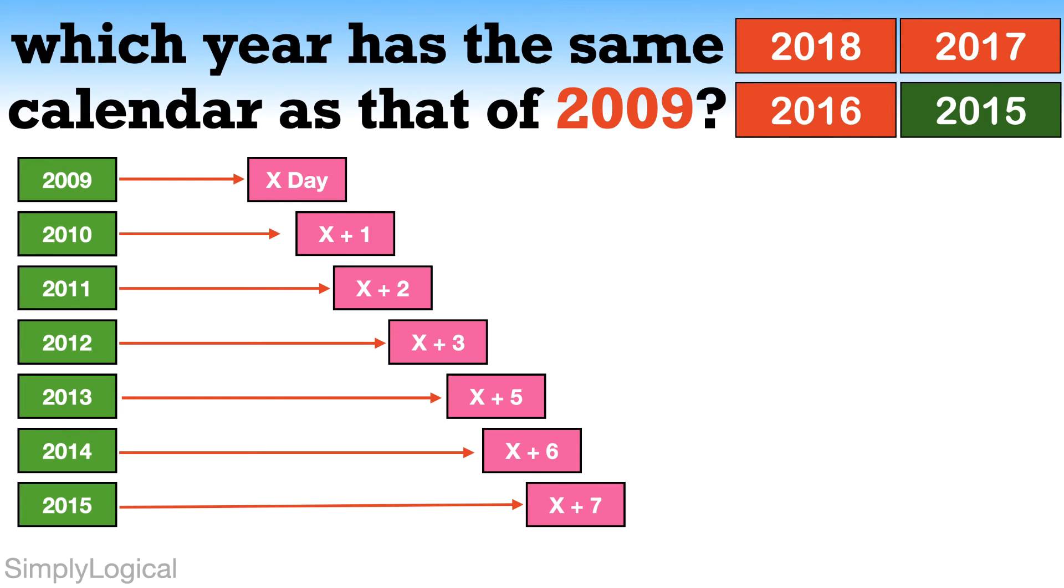So after every seven days, the same day appears. So the first day of 2015 will be the same as 2009. Since both are ordinary years, we can use the calendar of 2009 in 2015. Hence, the answer to this problem is 2015.